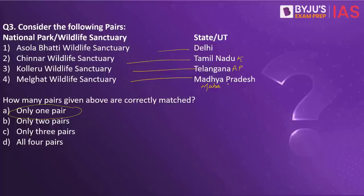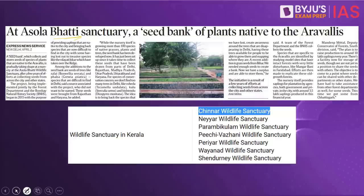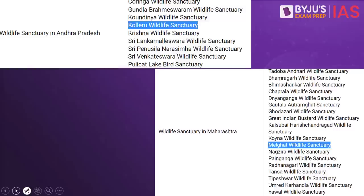Some important wildlife sanctuaries from Kerala include Chinnar, Nayar, Parambikulam, Pichhi Valahi, Periyar, Vainad, and Shandranud Wildlife Sanctuaries. Wildlife sanctuaries in Andhra Pradesh include Krishna, Kolleru, Kaudenya, Gundla, Kuringa, Sri Malleshwara, Sri Penusilla Narasimha, Sri Venkateshwara Wildlife Sanctuaries, and Pulikat Lake Bird Sanctuary. Melgat Wildlife Sanctuary belongs to the state of Maharashtra. As part of the assignment, put in the comment section some of the important wildlife sanctuaries from Chhattisgarh and Gujarat.